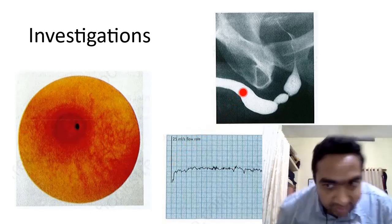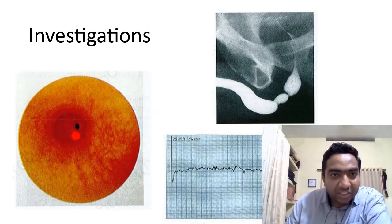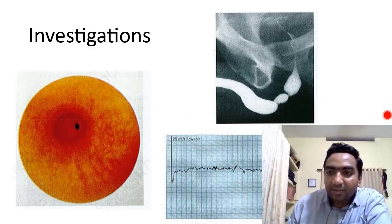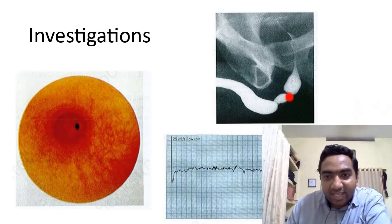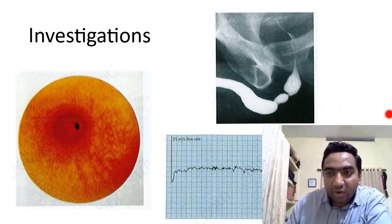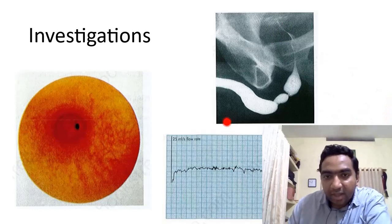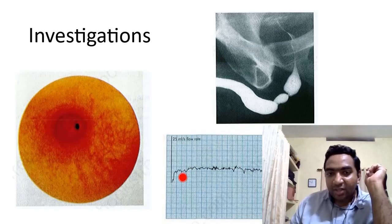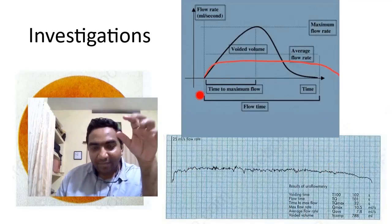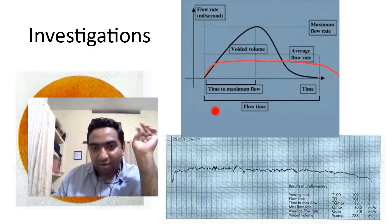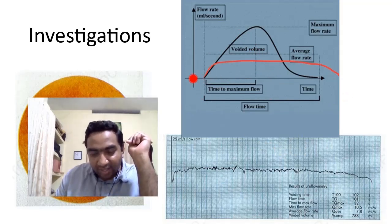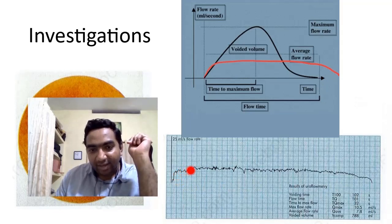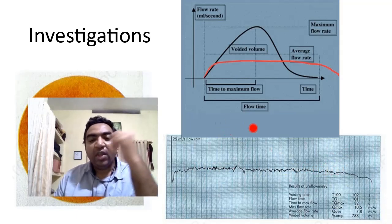Investigations of urethral stricture include those we have already discussed. On cystoscopy, we can see the stricture — the hole is narrowed. On retrograde urethrogram, we can see a stricture in the bulbar urethra with the bladder not filling properly. On uroflowmetry, instead of the normal bell-shaped curve, in urethral stricture there is a slight initial increase in flow, then a constant plateau for a long time, and only then a decrease — a plateau-shaped uroflowmetry curve is the feature of urethral stricture.